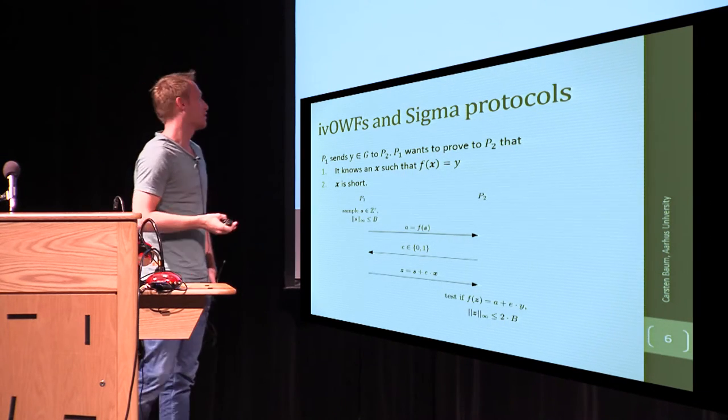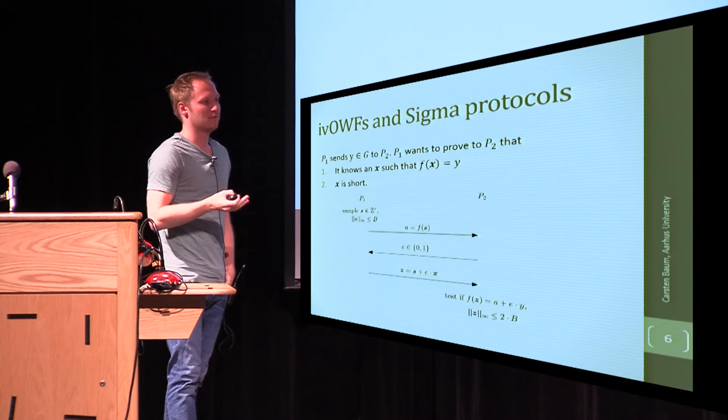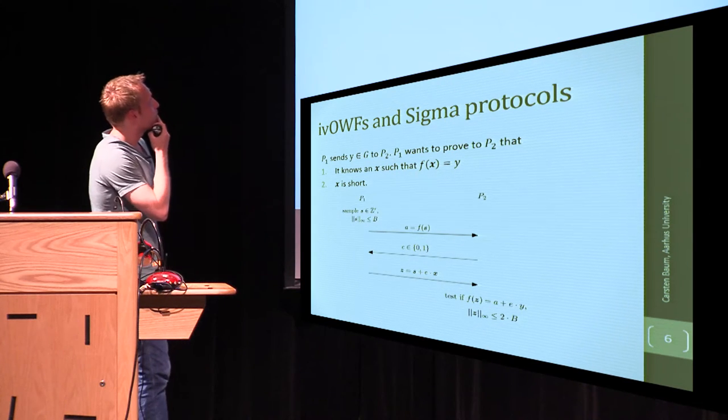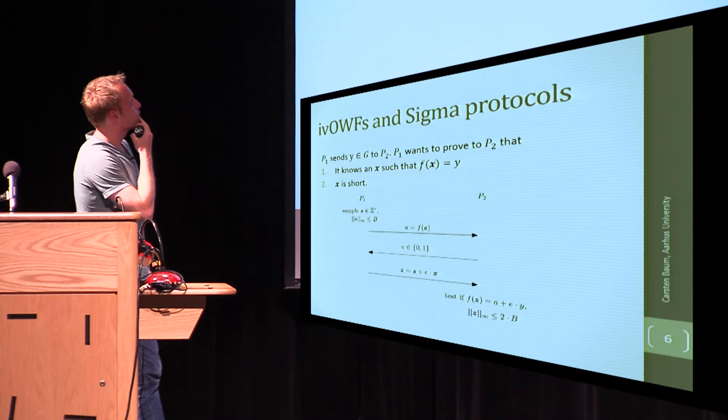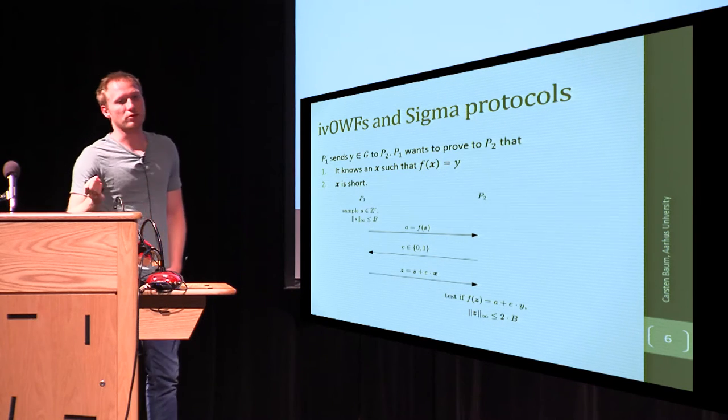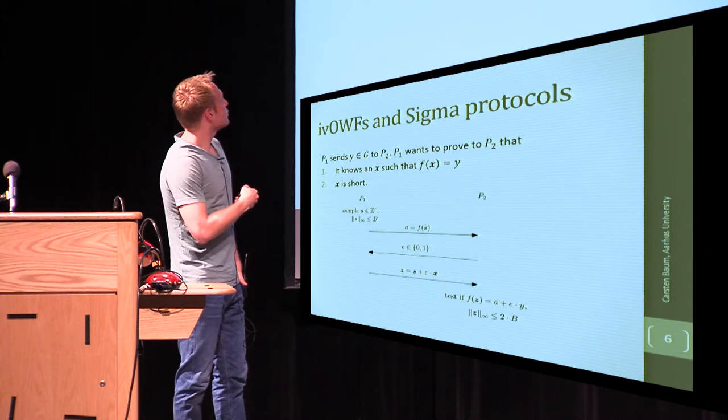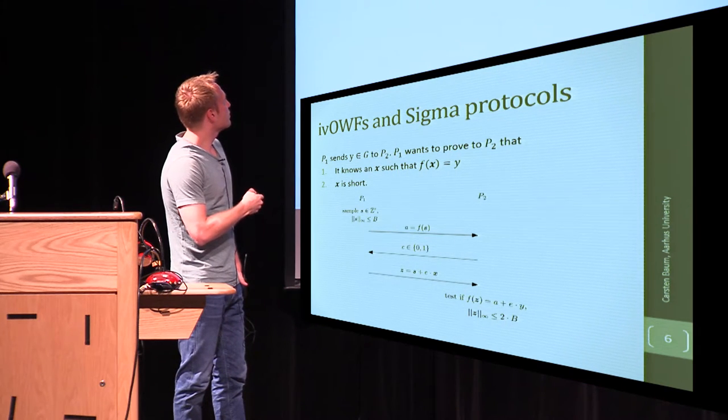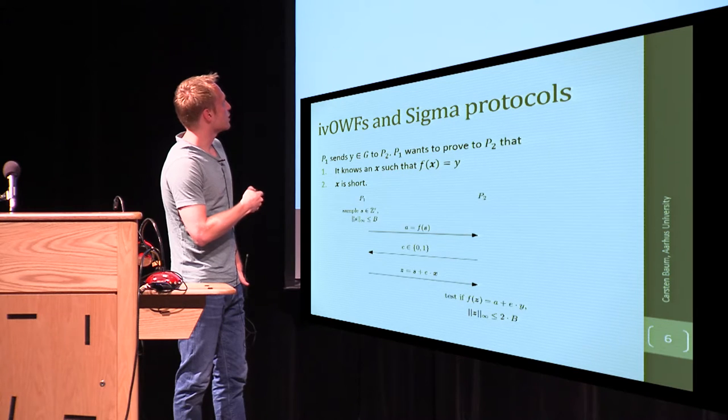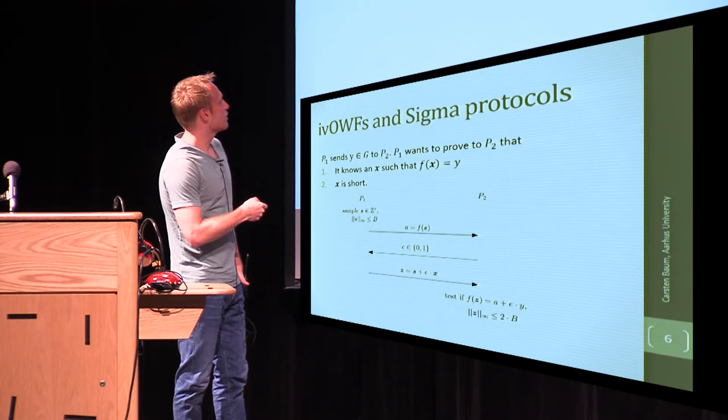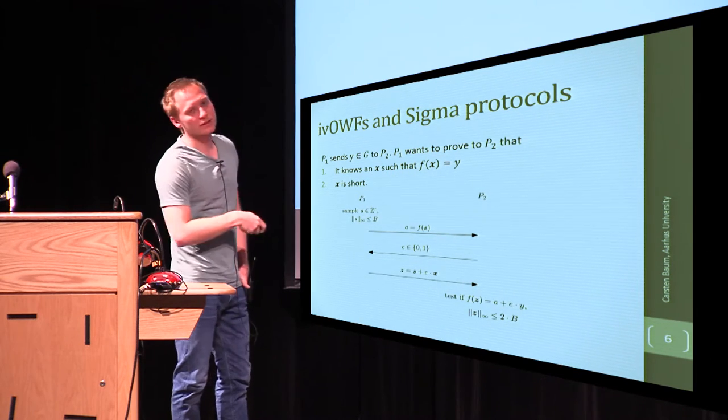So the title of this talk is how to prove that something is short. The first idea coming to one's mind may be, let's use sigma protocols. Just to remind you what sigma protocols are, you sample an auxiliary value S. That is supposed to be short, that's what the prover does. He applies the one-way function, sends it over to the verifier, and the verifier decides.